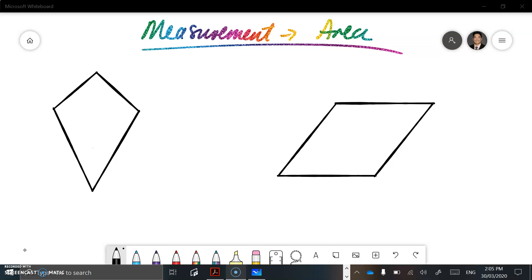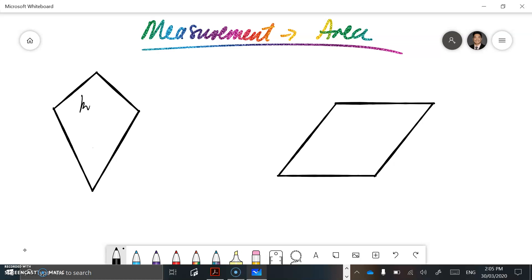Just before we get into that, I want to include two extra shapes. Here we have a kite, and then we have our rhombus again. There's a reason why I've reintroduced the rhombus, because there's another context that you might get for the area.